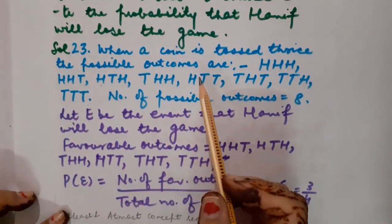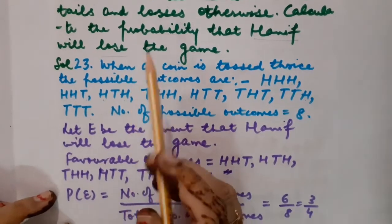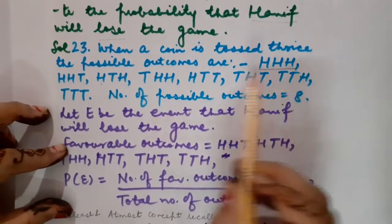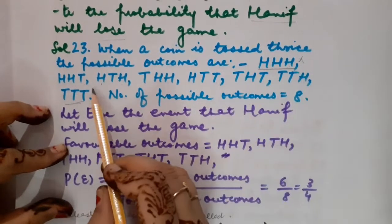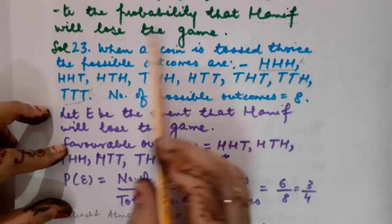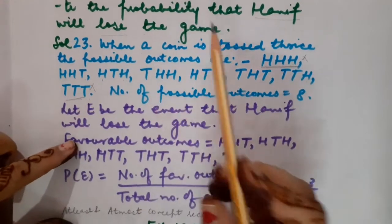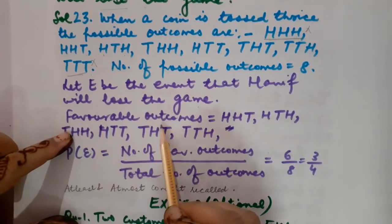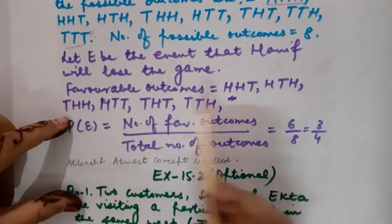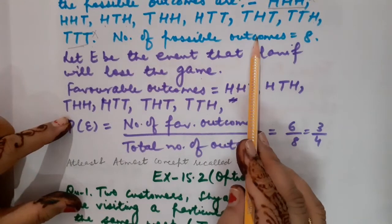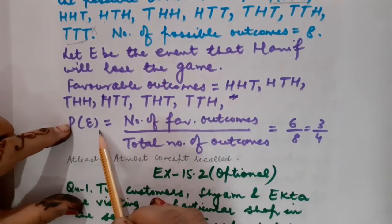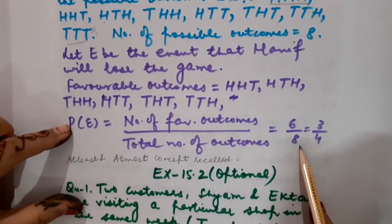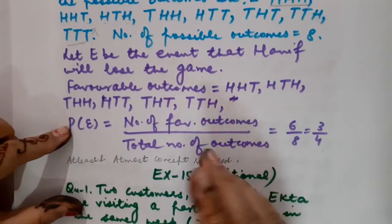We are calculating the probability when Hanif loses the game. He wins only when he gets HHH or TTT. So those two outcomes are not favorable for the losing event. Let E be the event that Hanif loses. The favorable outcomes are the remaining 6. So the probability is 6/8, which equals 3/4.